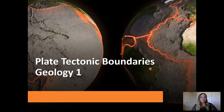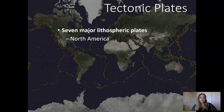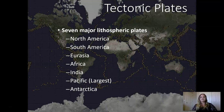Welcome back to Kiersey's virtual classroom. Today we're talking about plate tectonic boundaries. Previously we talked about continental drift and the rise of plate tectonic theory, and now we're going to talk about the boundaries specifically. We discussed last time that we have major tectonic plates on Earth. The seven major lithospheric plates are North America, South America, Eurasia, Africa, India, Pacific, and Antarctica — and the Pacific is the largest.